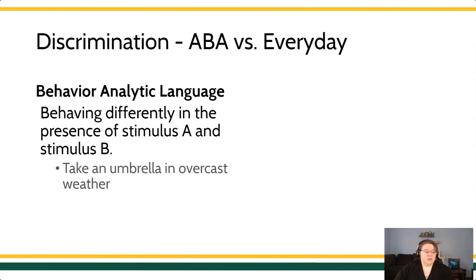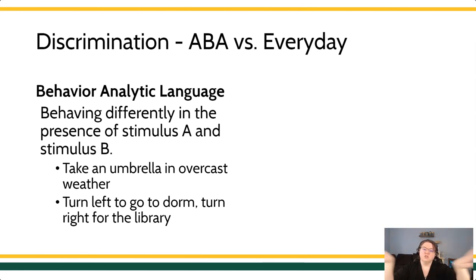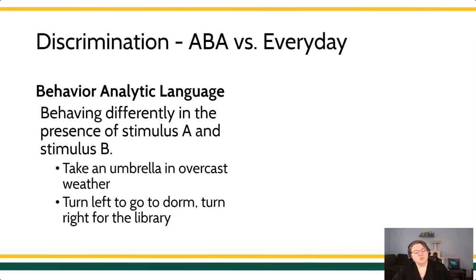Other examples could be taking an umbrella on days when the weather is overcast, or how you get around campus — knowing that in this parking lot you go left to the dormitory and right to the library. You're making that choice, choosing to go one direction under certain stimulus circumstances and a different direction under different stimulus circumstances. This discrimination language in behavior analysis is very value neutral.